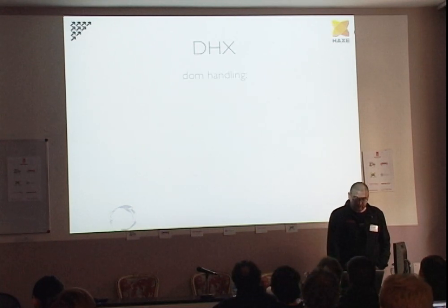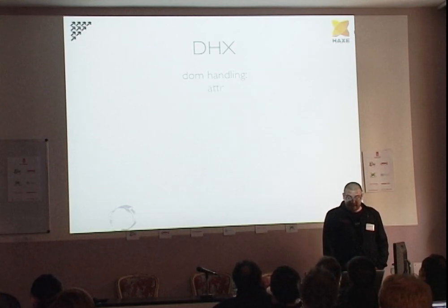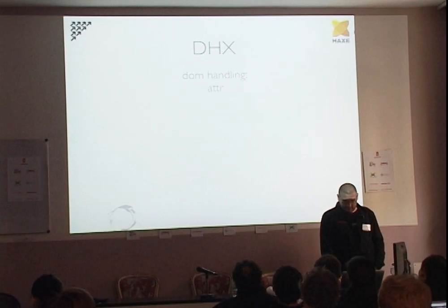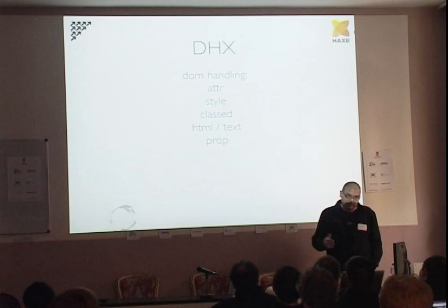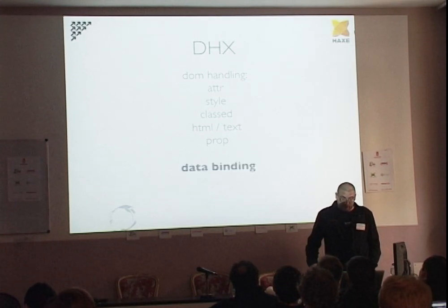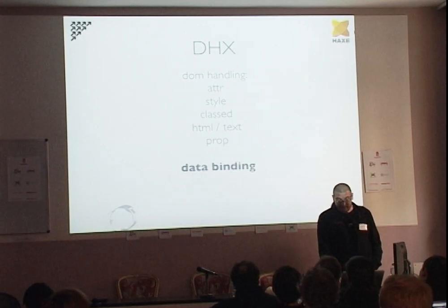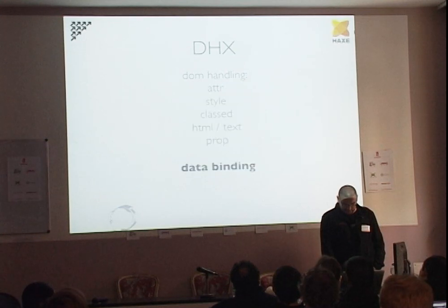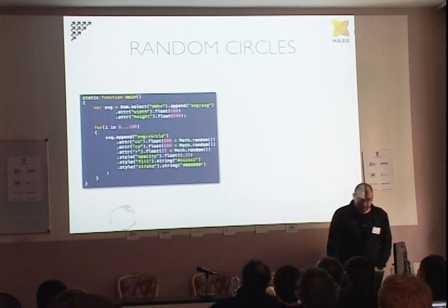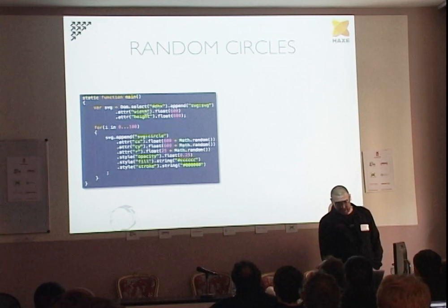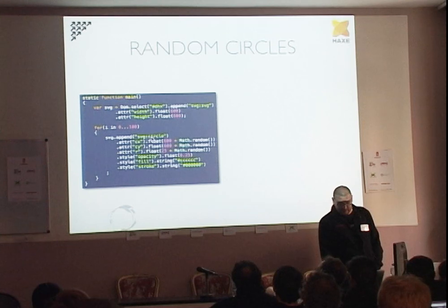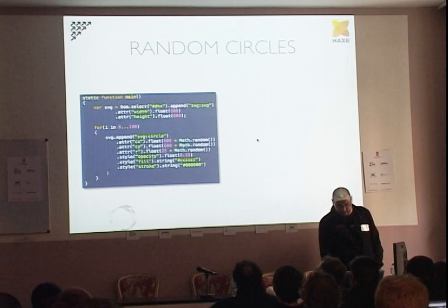Then we have the DHX library, which is essentially a DOM handling library. You can easily set attributes, styles, classes, HTML and text content, properties, and so on — basically what jQuery does, with a different style. Here's a small snippet using DHX: I'm selecting an existing div element inside my page, appending an SVG element to it and defining its size. Then I iterate 100 times, adding circles with a random center, random radius, and a set of styles for fill and stroke. And this is the result.